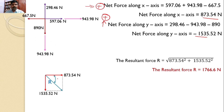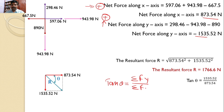The angle theta made by the resultant force with the X axis is given by tan theta = ΣFY / ΣFX. That is, tan theta equals 1535.52 divided by 873.54, giving tan theta equal to 1.758, and therefore theta equals 60.37 degrees.